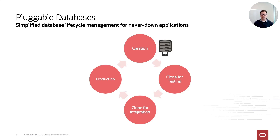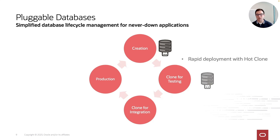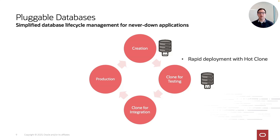It starts with creation — you develop a database application in a pluggable database. Once you reach a certain state, you can use rapid deployment with hot cloning to provide as many test environments as you want, either in the same container database or in other container databases in your estate — without impacting your development or production environment.